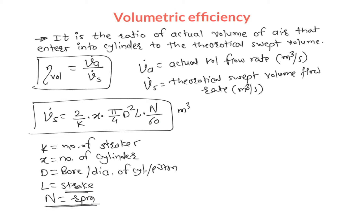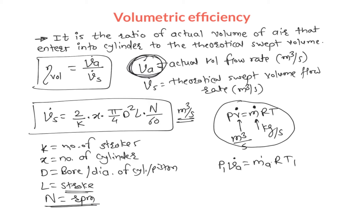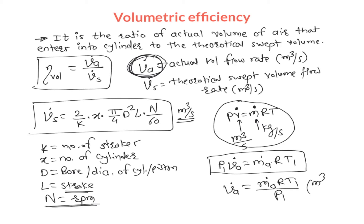For the actual volume flow rate Va, we calculate it using the ideal gas equation. The ideal gas equation is pV = mRT. If we use mass flow rate in kg per second, we get volume flow rate in meter cube per second. At the inlet: p1 × Va actual = mass flow rate actual × R × T1. Therefore, actual volume flow rate equals mass flow rate actual × R × T1 divided by p1, in meter cube per second.